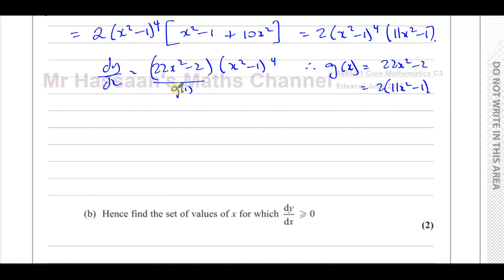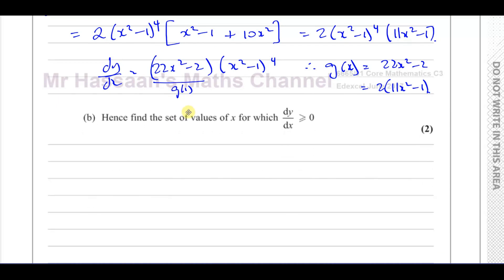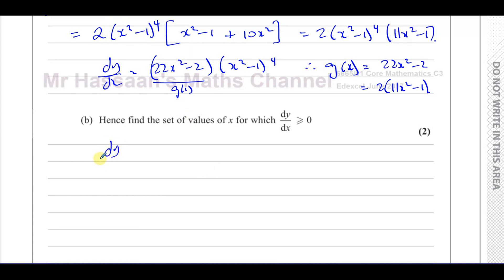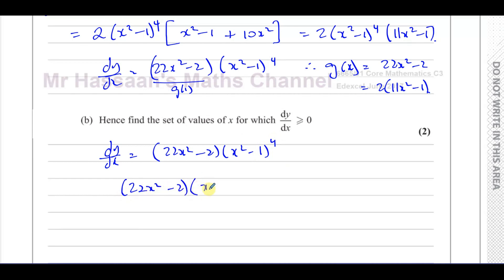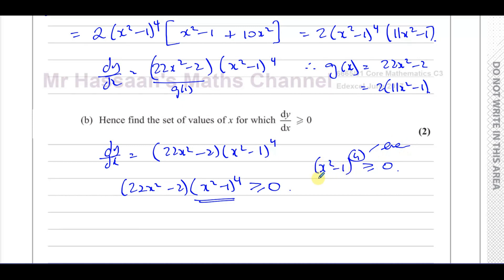Now we're going to do part b. It says: find the set of values of x for which dy/dx is greater than or equal to 0. We know that dy/dx equals 22x squared minus 2 times x squared minus 1 to the power of 4. We want to know when this is greater than or equal to 0. I know that x squared minus 1 to the power of 4 is always greater than or equal to 0 — because it's raised to an even power, it's always going to be positive, or 0 at the least.